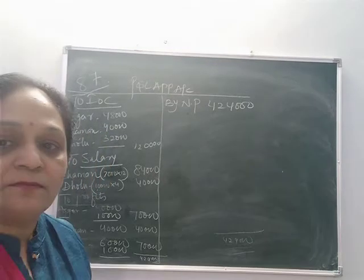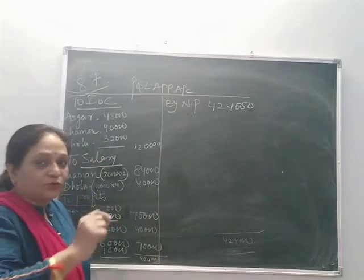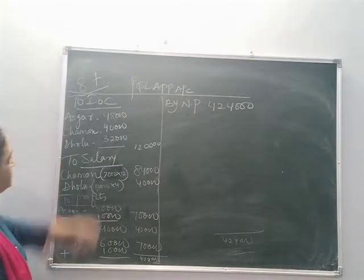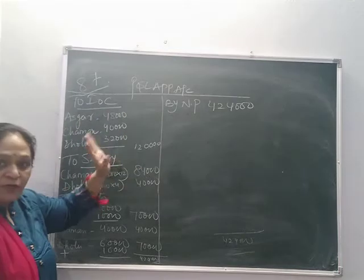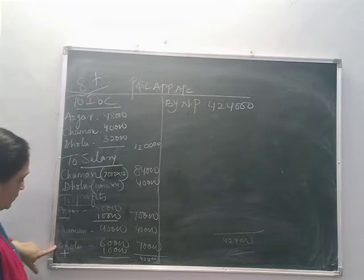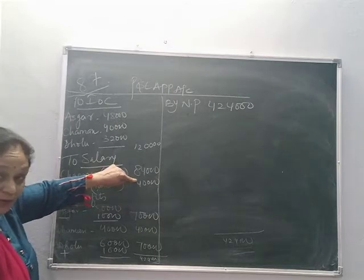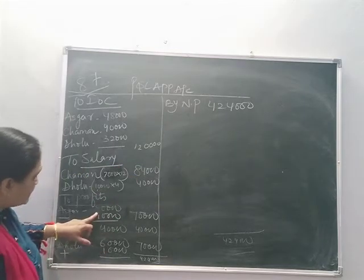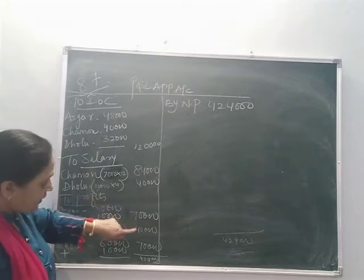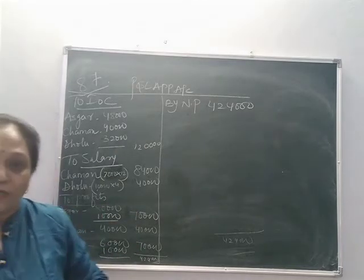After showing the distribution of divisible profits, we are completing the P&L appropriation account. Interest on capital and salary have already been provided. For profits: Dholu was getting 60,000 plus salary 40,000 already provided, so it is 1,00,000. Now 10,000 will be subtracted from Asghar and given to Dholu. So the final figures are: Asghar 70,000, Chaman 40,000, Dholu 70,000. This is how we complete the P&L appropriation account.